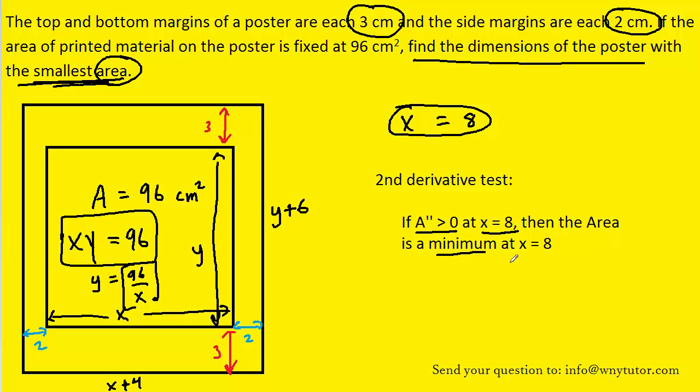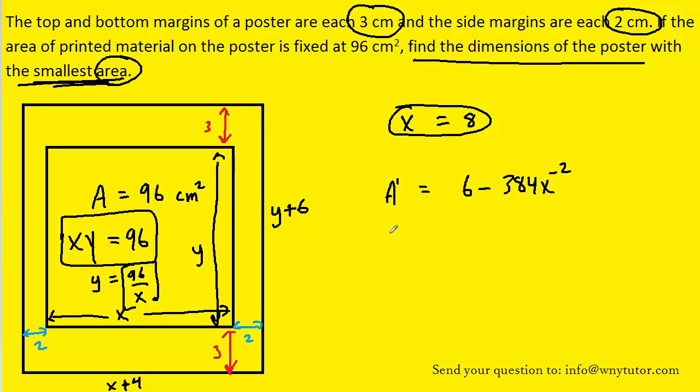So why don't we remind ourselves what the second derivative was? To calculate the second derivative, we recall the derivative of the constant will be 0. And we use the power rule by pulling down that exponent. A negative times negative 2 will become a positive 2 times 384x, and then subtract 1 to make x to the negative 3.